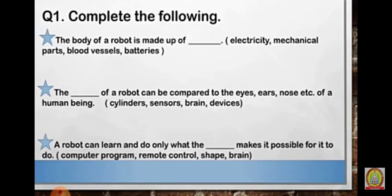Q1: Complete the following. The body of a robot is made of mechanical parts. Second, the sensors of a robot can be compared to eyes, ears, nose, etc. of a human being.